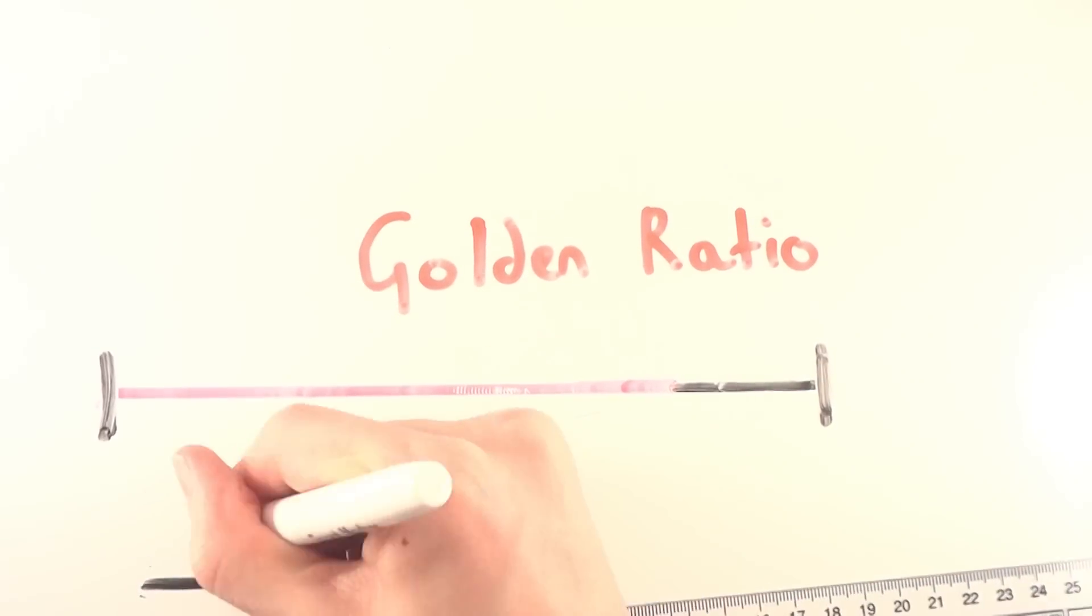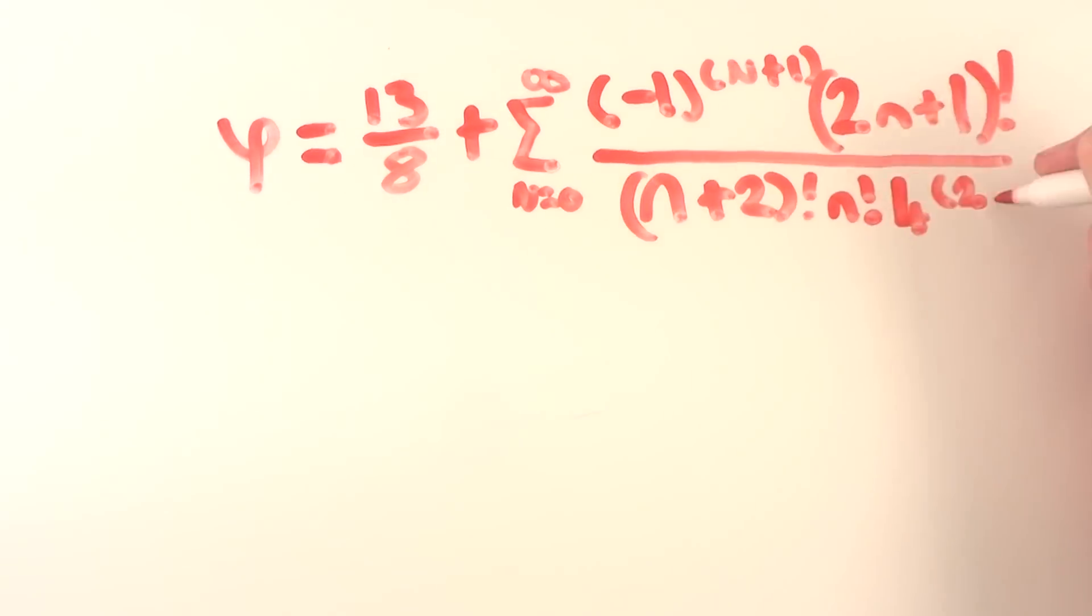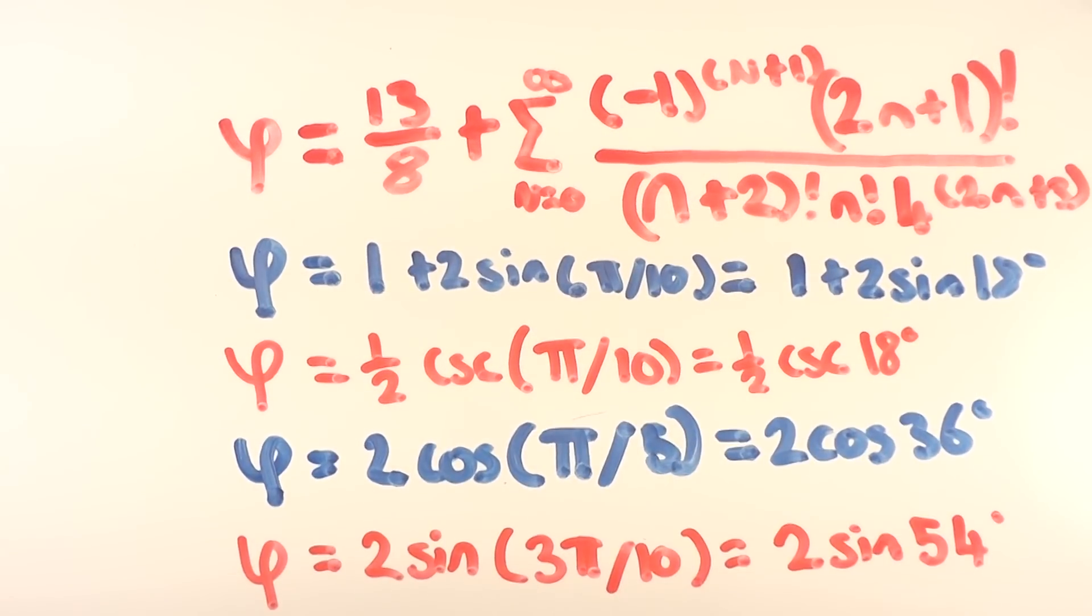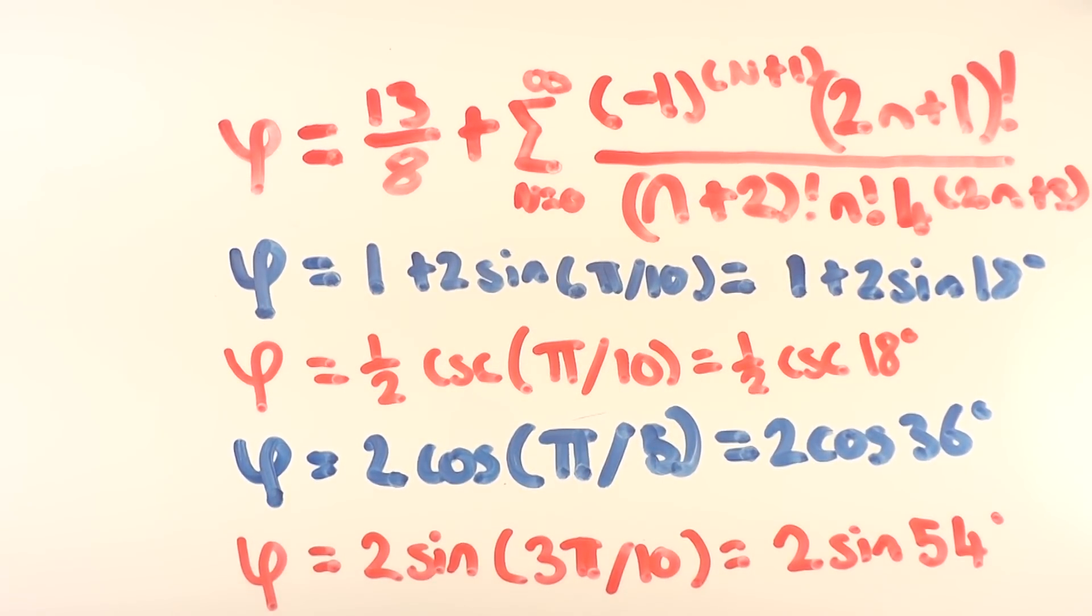This line is the golden ratio, and so is this rectangle. There are also so many equations which equal the golden ratio, with the equations being as equally beautiful as the number it produces.